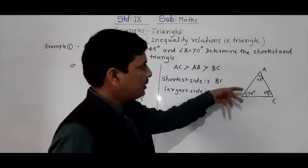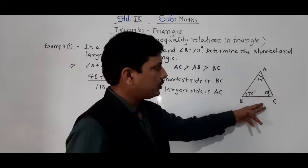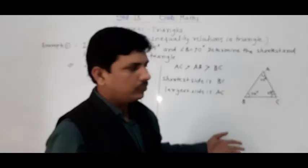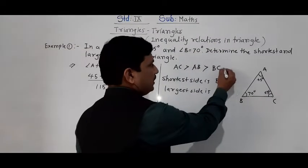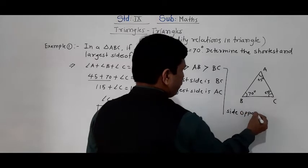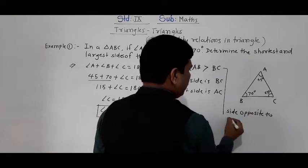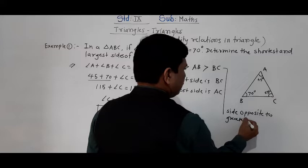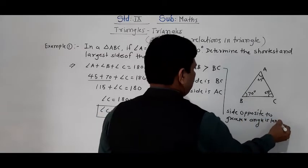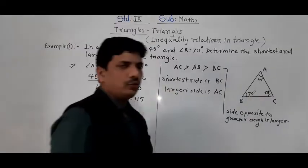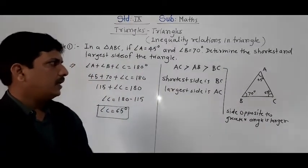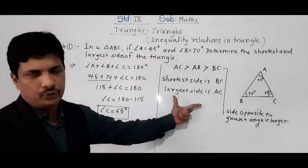So the shortest side is BC and the largest side is AC. The reason: the side opposite to the greater angle is larger. So according to this, the shortest side is BC and the largest side is AC.